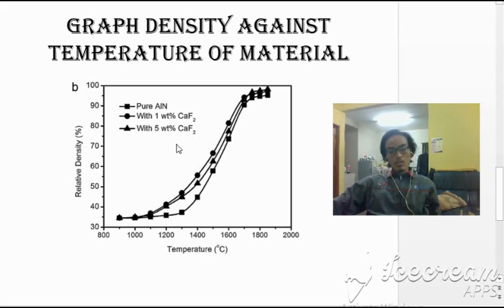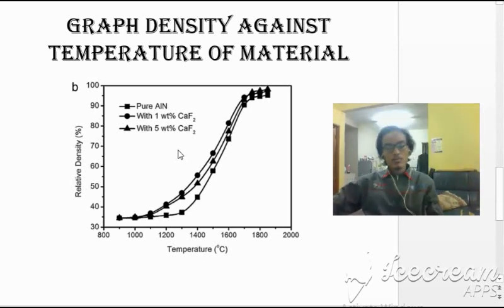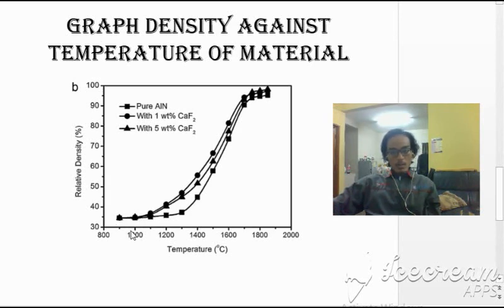So we go to the third one, the mixture of 5% calcium chloride, the triangular shape. The starting point is the same at 900 degrees Celsius. At 1000 degrees Celsius, there is no change in the density. Until the temperature goes to 1200 degrees Celsius, the density of the material, the mixture with the calcium chloride, suddenly increases until it reaches the maximum point.